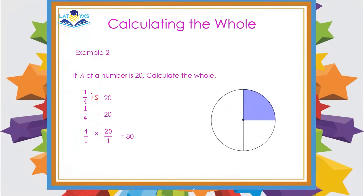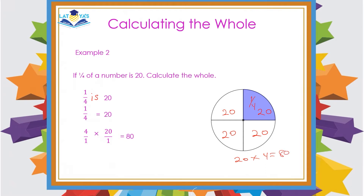I could have looked at the same question using a fractional model. It tells me that 1 quarter of a number is 20 — that's 1 out of 4 parts. Then another quarter of this number will also be 20, this quarter will be 20, and this quarter will be 20. So to calculate the whole number, we can simply multiply 20 by 4, and we will get the whole, which is 80.